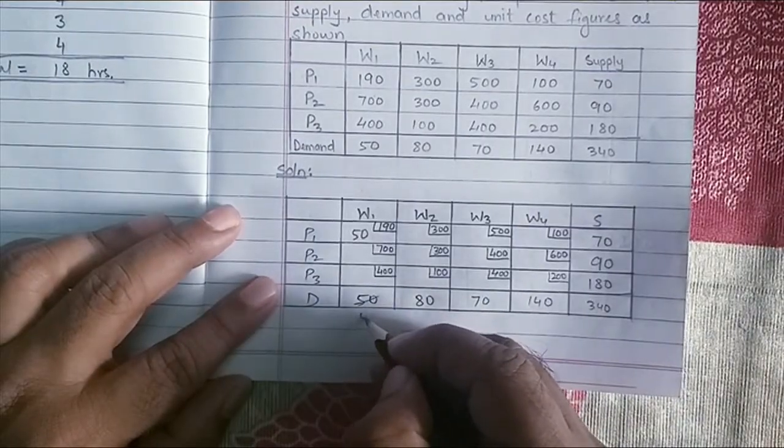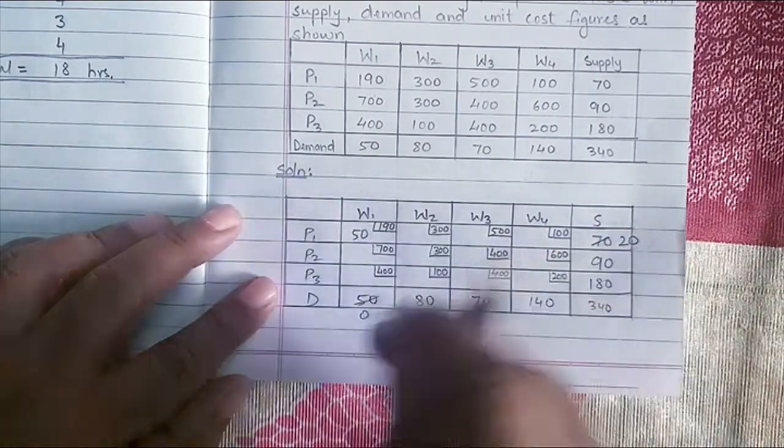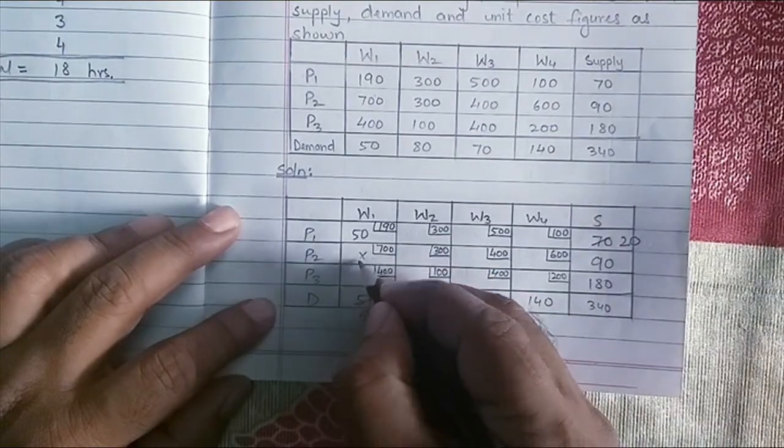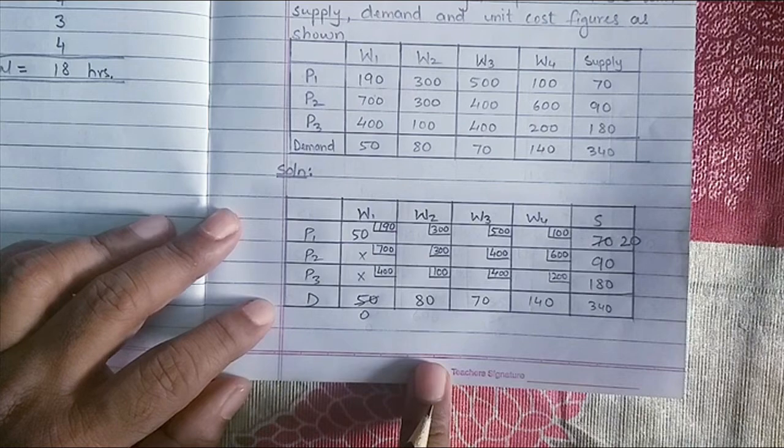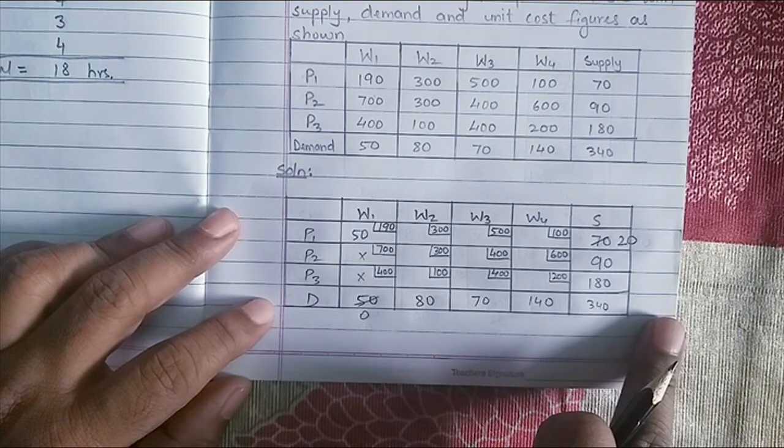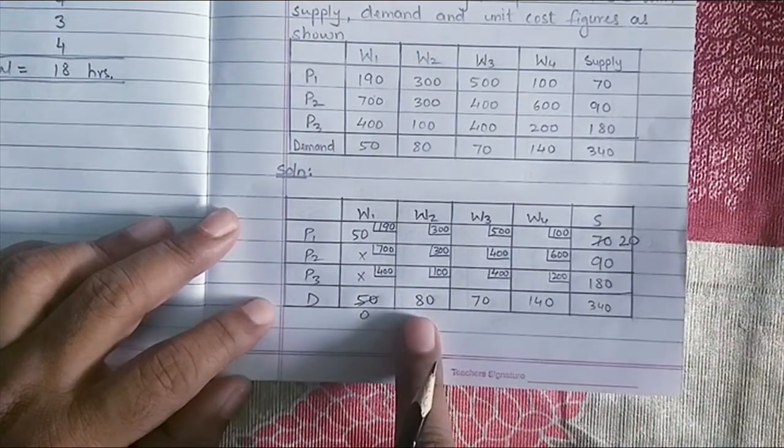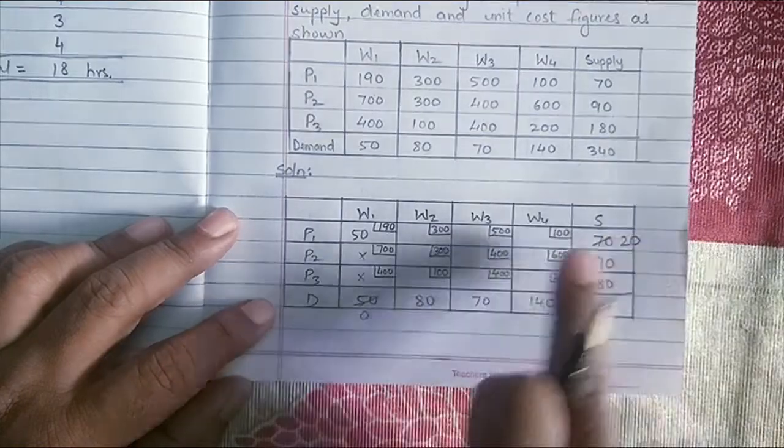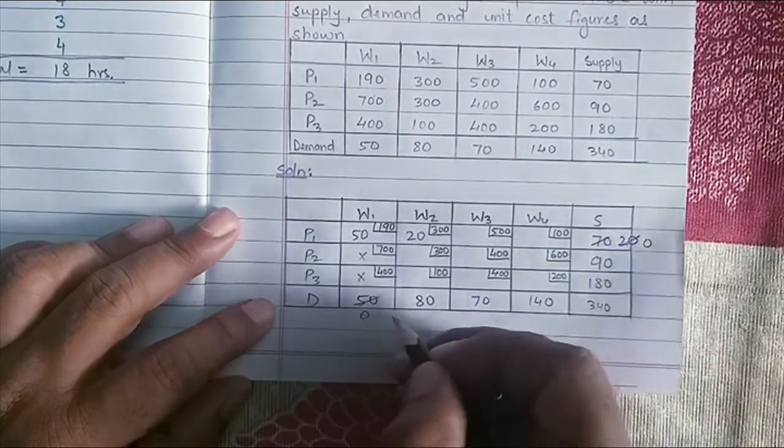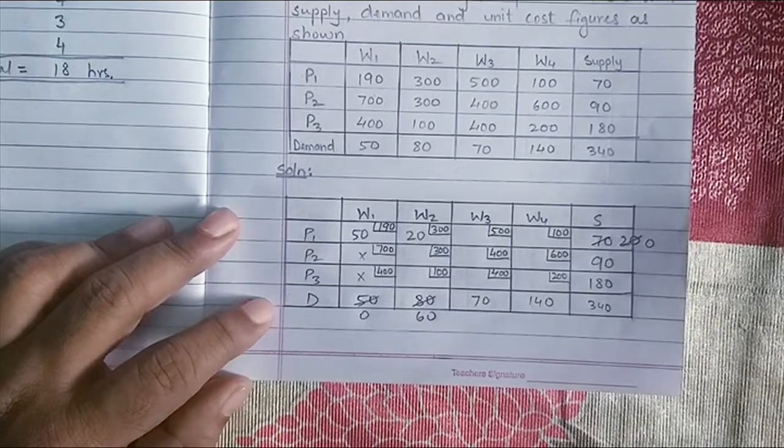Subtract 50 units. From demand, I get a 0 here. 70 minus 50 will give me 20. Now in this column, there are no more allocations possible. So I just cross the cells where no allocations can happen now. The next cell where I have to do the allocation, the North-West corner is P1, W2. Supply is 20, demand is 80. The smallest value among these two is 20. So assign 20 here. Subtract 20. From 20, I get 0, and here I get 60.